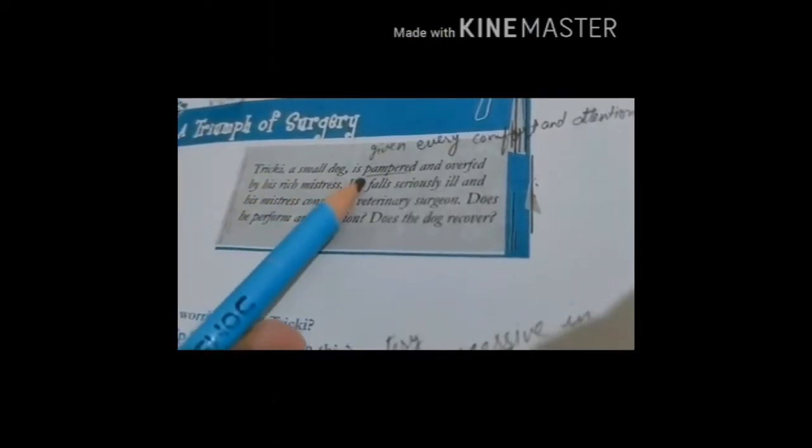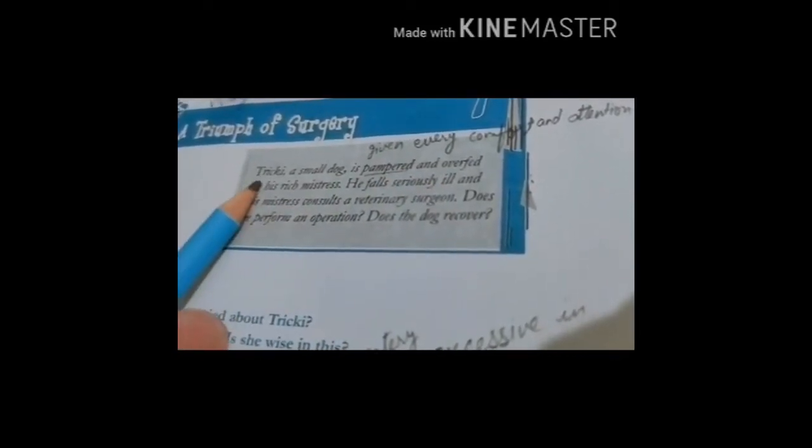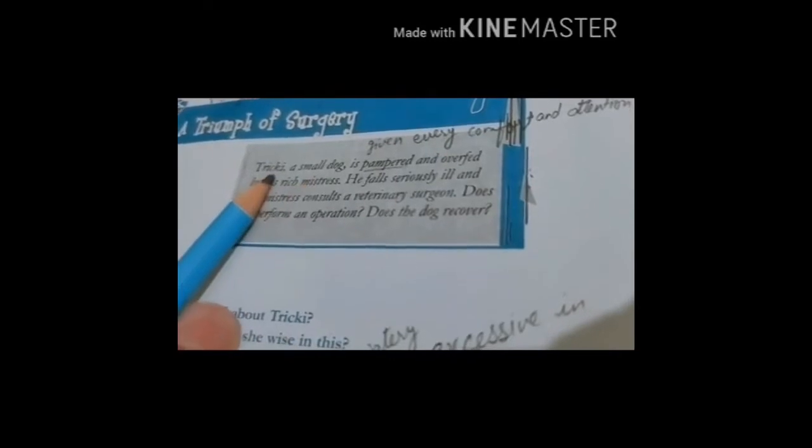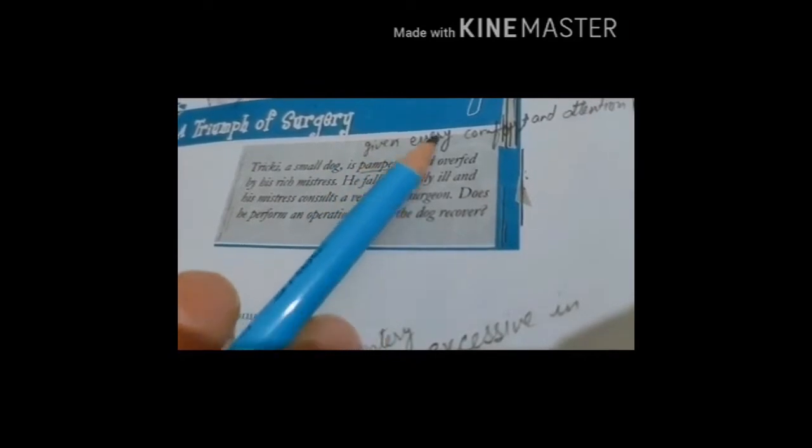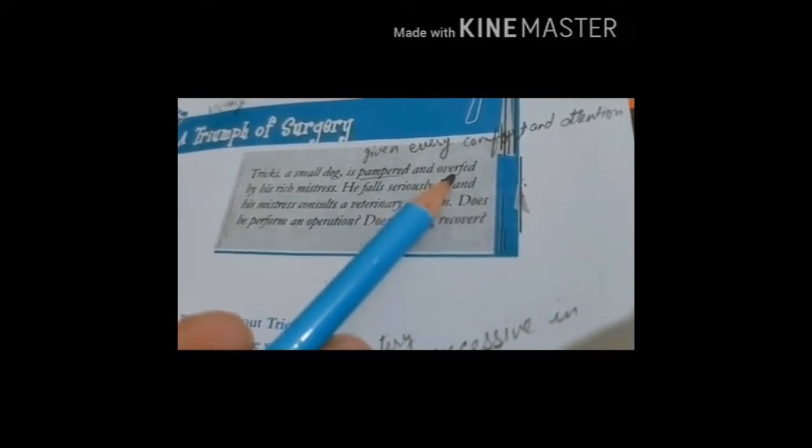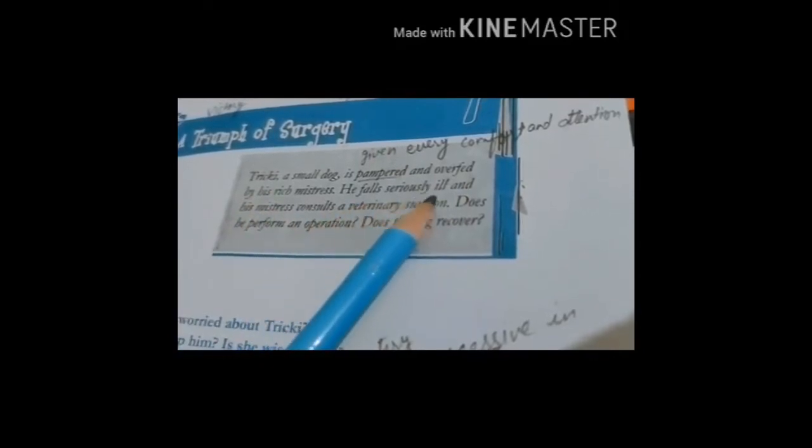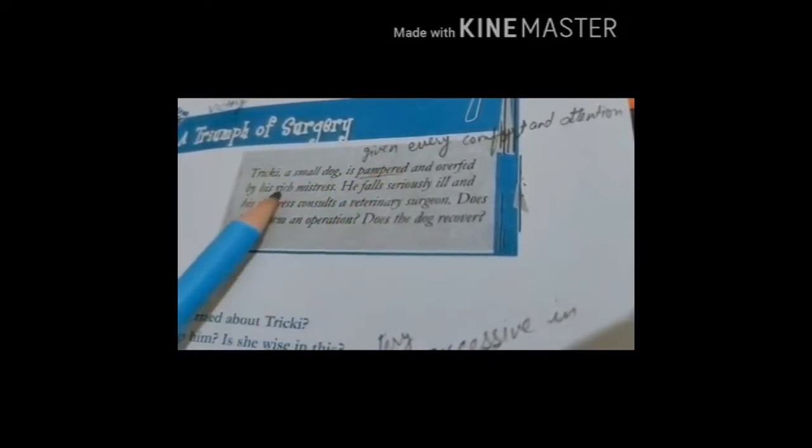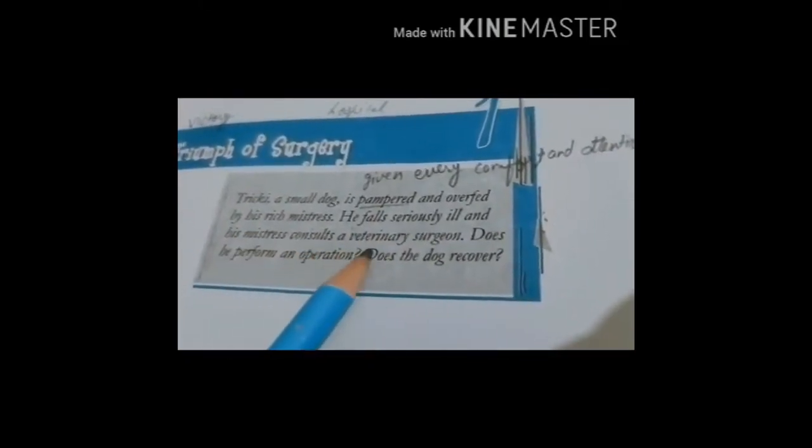Tricky, a small dog, is pampered and overfed by his rich mistress. Pampered means given every comfort and attention. And he was overfed, meaning a lot of food was given to him to eat. He falls seriously ill after eating a lot of food, after being pampered and overfed by Mrs. Pumphrey.